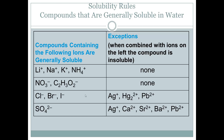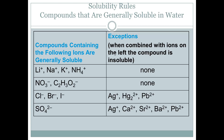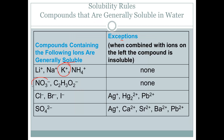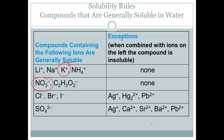These are the solubility rules. If we look back at our example, potassium iodide was soluble — anything with potassium in it is going to dissolve; it's soluble. The next one is lead nitrate. Nitrate is here — anything with nitrate in it, with no exceptions, will dissolve. And what it formed was lead iodide. Well, iodide is supposed to be soluble; however, lead is an exception, so that means it will actually form a solid.